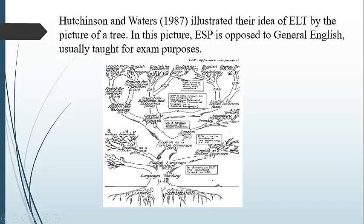ESP — that is to say, English for Specific Purposes — is broken down into three branches. We have the first one: English for Science and Technology. Then we have English for Business and Economy. And the third branch, we have English for Social Sciences.